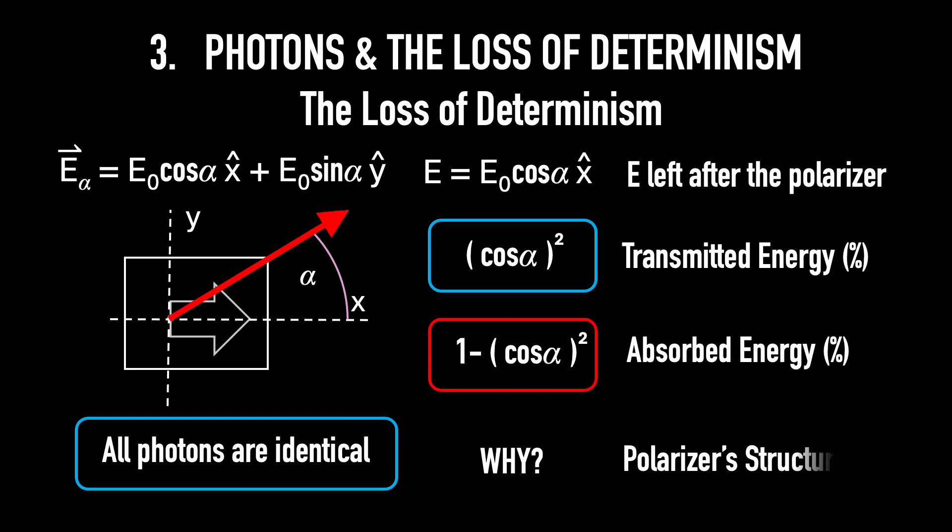That was the hidden variable theory. But in 1964, John Bell showed that quantum mechanics can't be made deterministic with hidden variables. So, at the end of the day, we've lost determinism. Photons either get through or not. We can only predict probabilities. Because of this loss of determinism, how do we write the states of a photon?